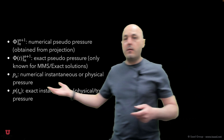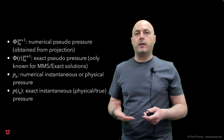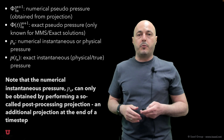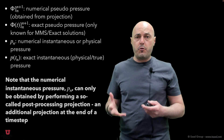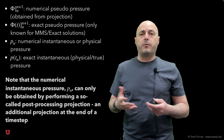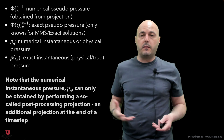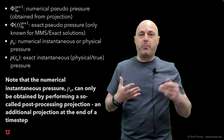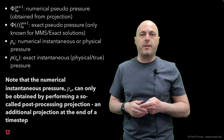Equally, p sub n is the numerical instantaneous pressure, and p(t_n) is the exact instantaneous or physical pressure. Note that p sub n — the numerical instantaneous pressure — can only be obtained by performing a so-called post-processing projection, which is a projection on u^{n+1}. See the manuscript for more discussion on that.